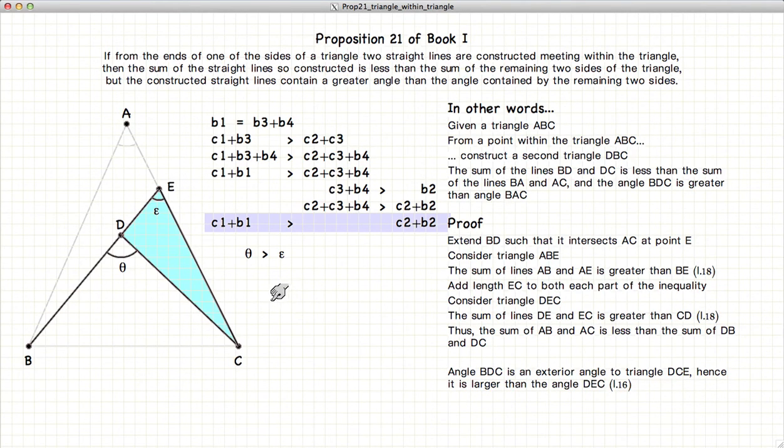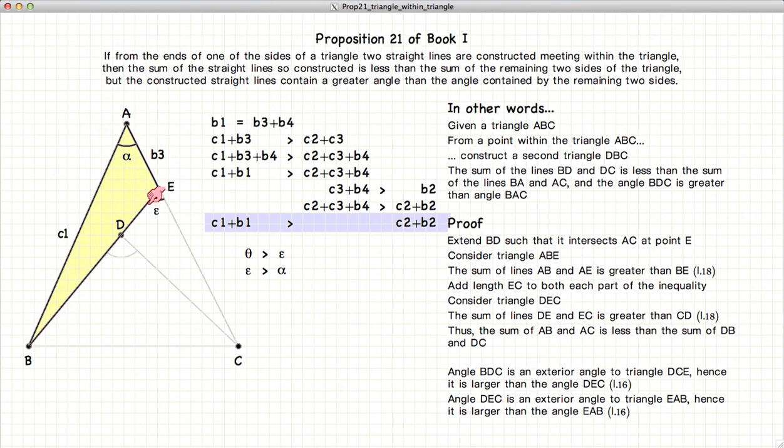From Proposition 16, we know that theta is larger than epsilon. Looking at this triangle, we know that epsilon is larger than alpha. So having established that theta is greater than epsilon, which is greater than alpha, we have demonstrated that theta is greater than alpha.